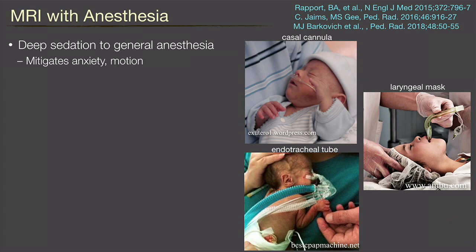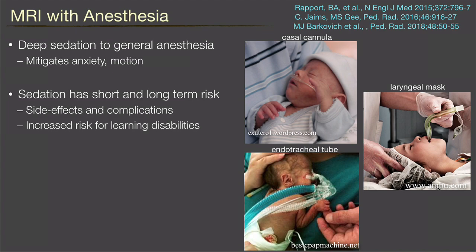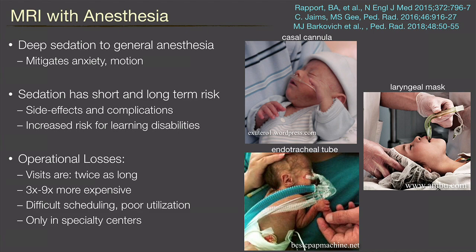There are different levels of sedation, from mild sedation to deep anesthesia. If you want to really mitigate anxiety and motion, deep or general anesthesia is often used. Sedation has been found to have short and long-term risks for pediatric patients — side effects and complications from putting them under anesthesia. Researchers have also found long-term effects like learning disabilities that occur over time. Beyond that, there are huge operational costs — visits are much longer, it's way more expensive from a staffing point of view, super hard to schedule, and results in poor utilization of the scanner. The problem is that it can only be done in certain centers, which limits the availability of MRI for pediatric patients.